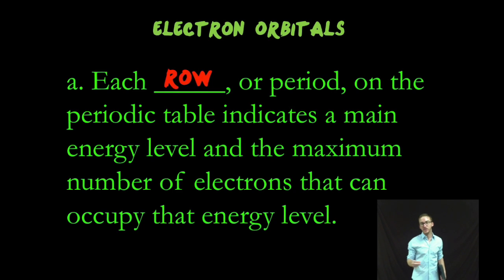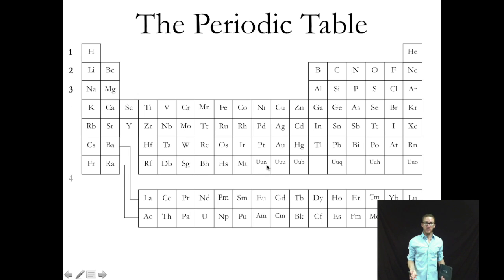Now, there's a really easy way to tell how many main energy levels an atom of a given element has. You simply need to take a look at the row, or period, that the element is in on the periodic table. So if it's in the first row, or period, it will have one main energy level. If it's in the second row, or period, it will have two main energy levels. So on and so forth.